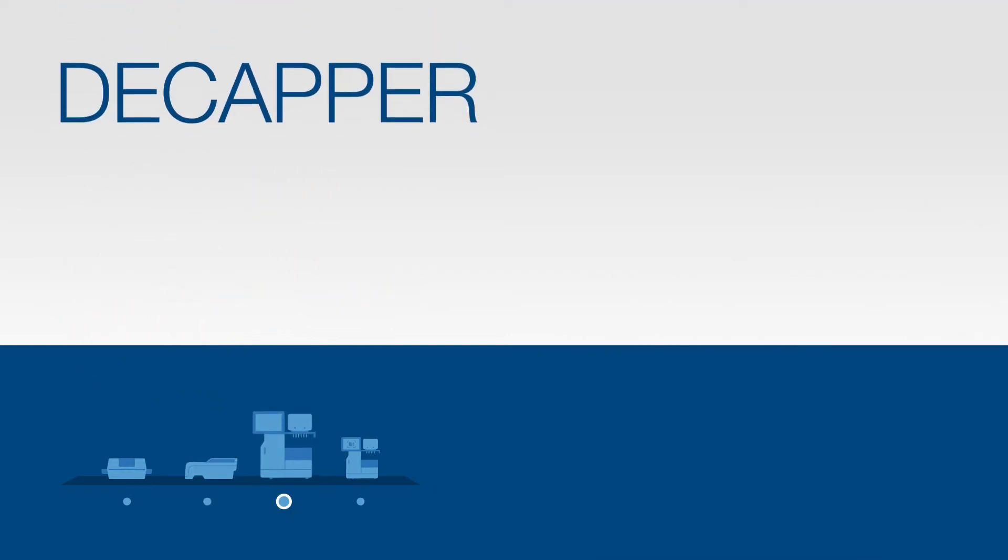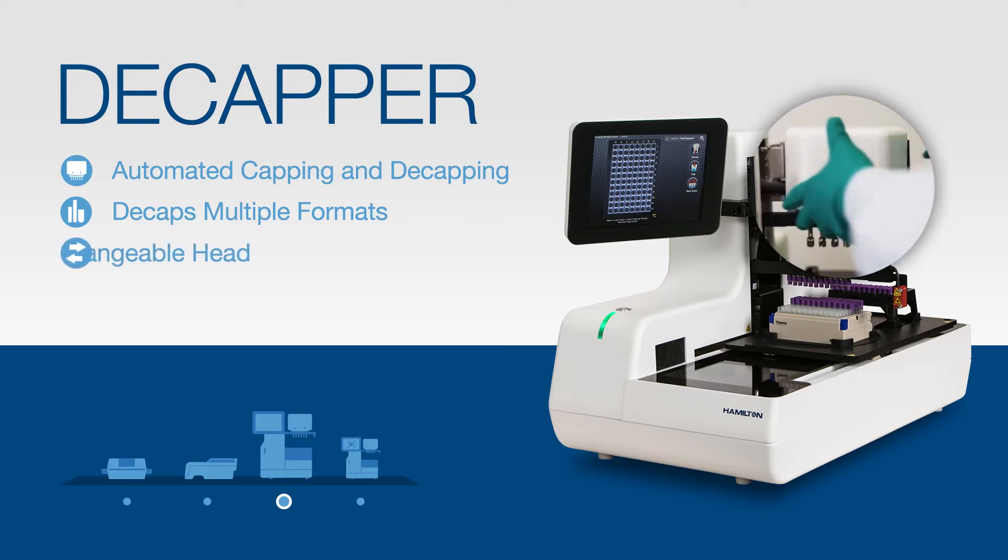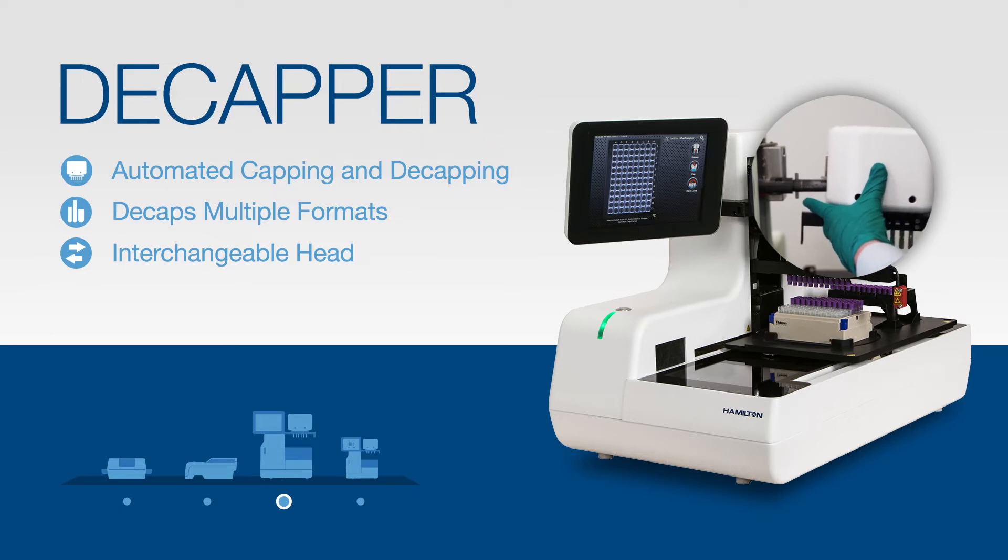Next up is our LabElite Decapper. The Decapper is an easy-to-use device that provides automated capping and decapping of screw cap tubes in 24, 48 and 96 format tube racks with either internal or external threads. The most remarkable feature of the LabElite Decapper is the ability to decap multiple rack formats on one device, simply by swapping out the interchangeable head. We'll explain this more later on, when we demonstrate the Decapper and review all its features and benefits.